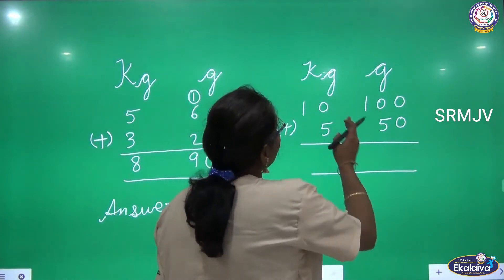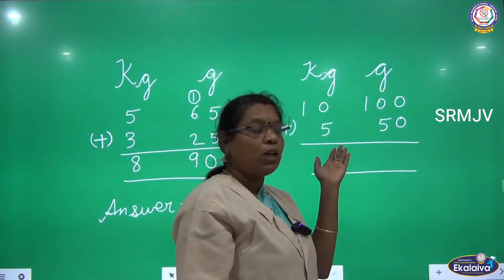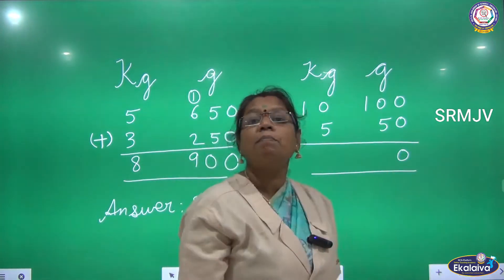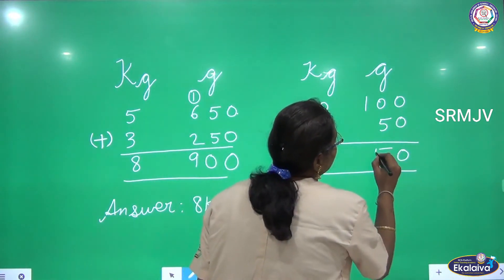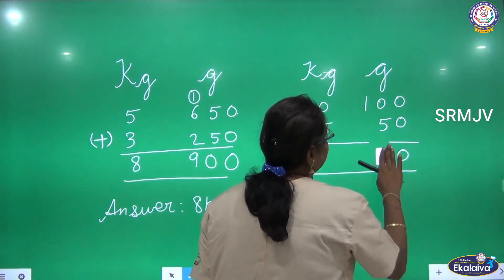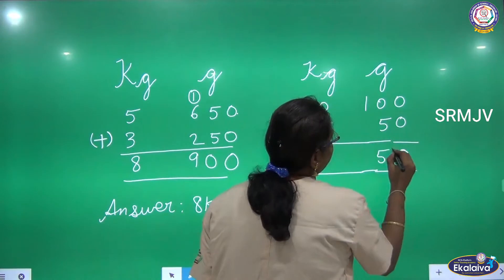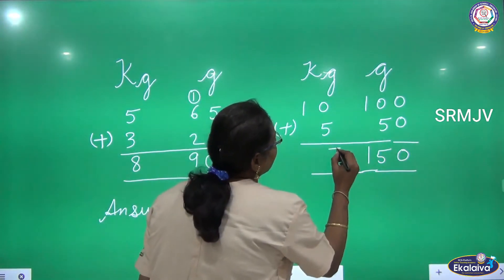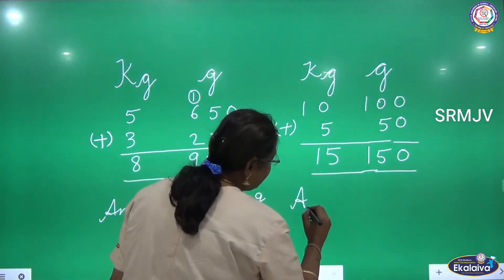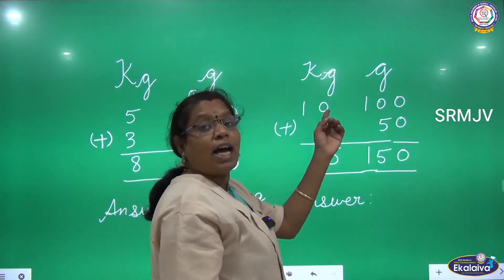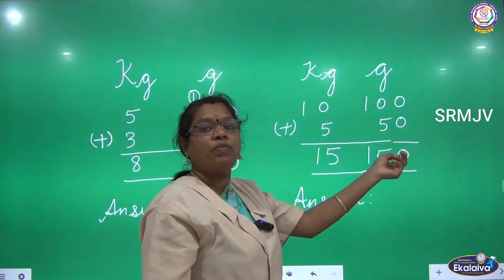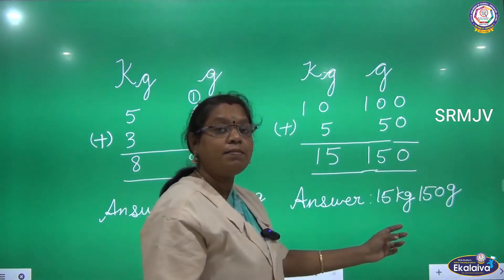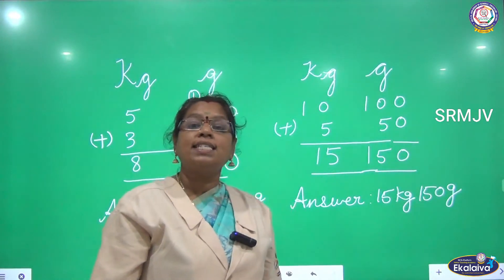Now look at this sum. We have 10 kilograms and 100 grams, and we are going to add 5 kilograms and 50 grams. Starting from the right side: 0 plus 0 is 0; 0 plus 5 — when you add any number with 0 you get the same number, so 5. The 1 carries over, giving 15 kilograms and 150 grams. When you add 10 kilograms and 100 grams with 5 kilograms and 50 grams you get 15 kilograms and 150 grams. Now let's see subtraction.